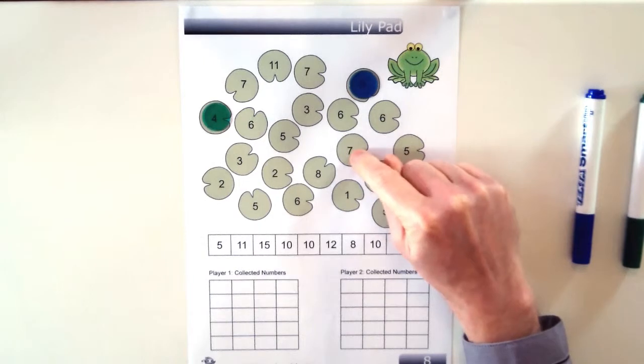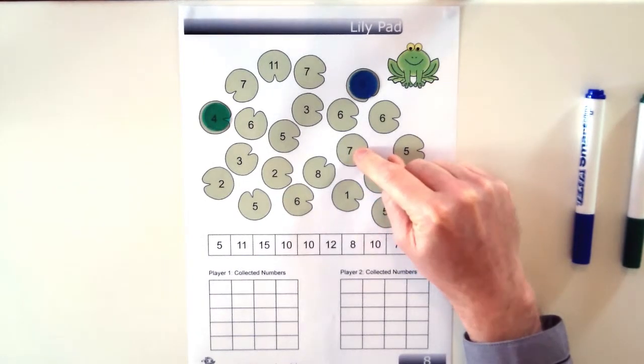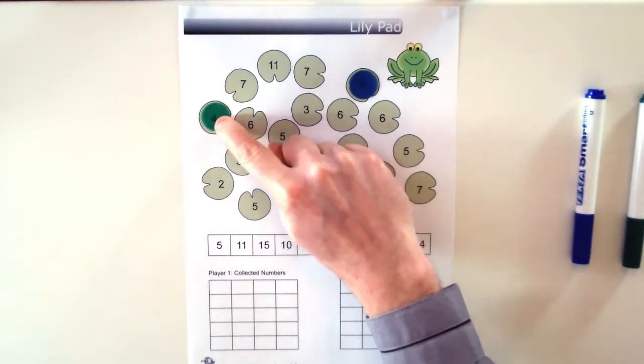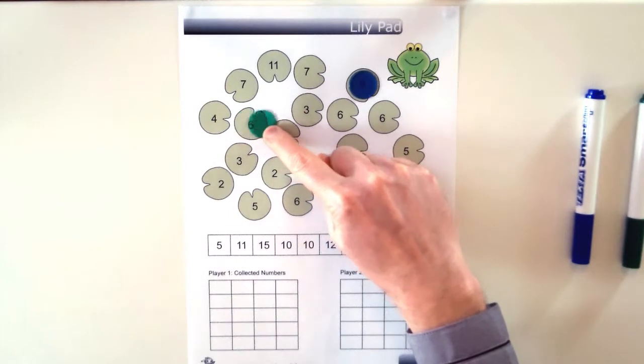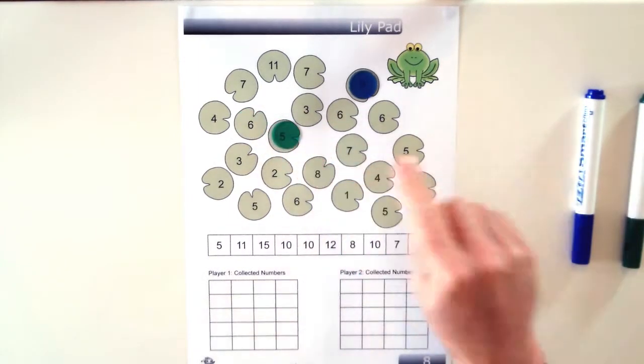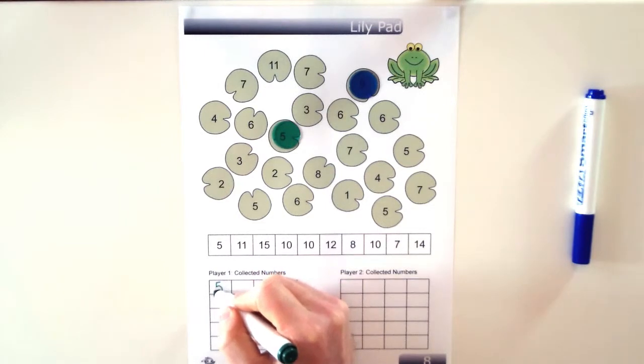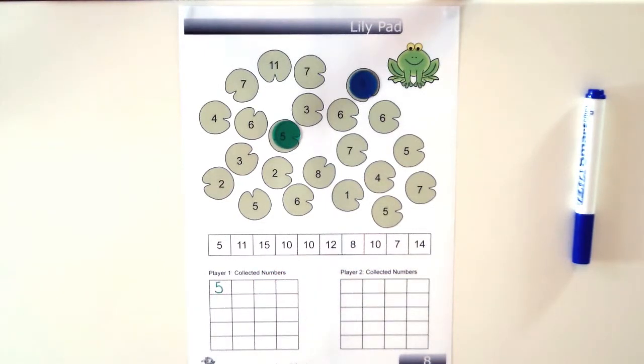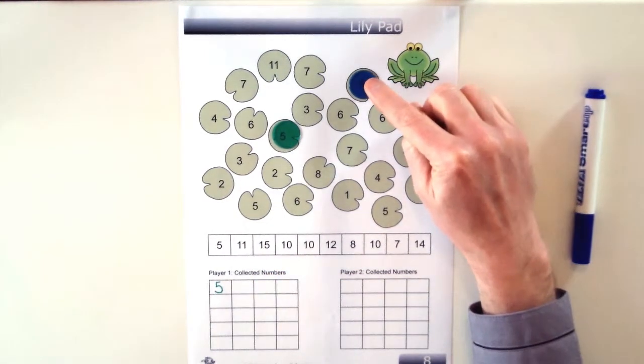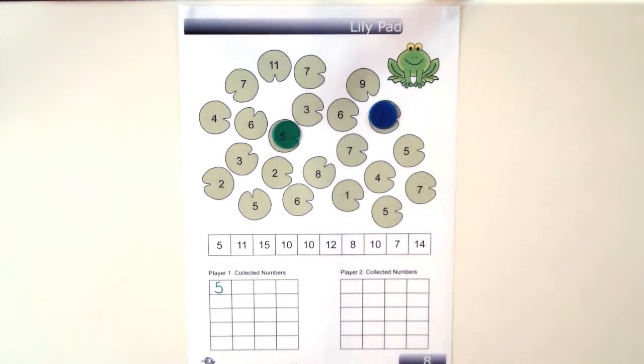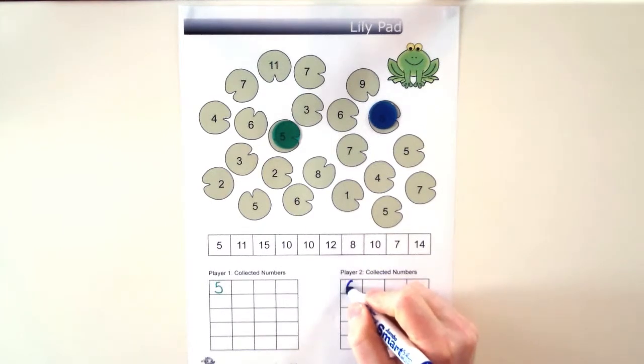Players need to land on lilypads and whichever lilypad they land on they collect the number and write it in their collected numbers grid just here. So green is going to start and they're going to go 1, 2 to land on the 5. So they write the 5 in their collected numbers grid here. Blue is going to move just 1 space and land on the 6 and put their collected number here.